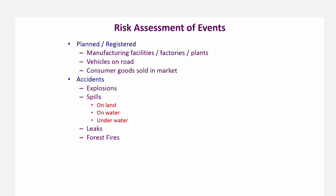What cannot be accounted for are accidents — events that are not supposed to happen in the normal course of things. But in all planned and registered activities, there is a possibility of an accident happening: for example, an explosion, or a spill on land, water, or underwater. There are several examples of oil spills on land, or a ship breaking and spilling oil on open sea, or an underwater pipeline spilling oil. There are also leaks from pipelines, and of course forest fires, which in some cases are natural and sometimes human-made.